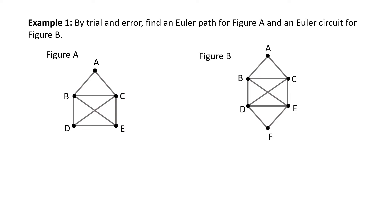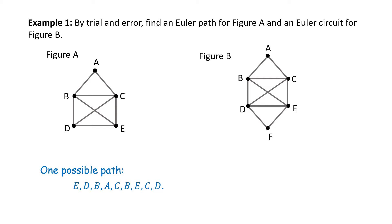By trial and error, find an Euler path for figure A and an Euler circuit for figure B. Take a few moments to try both of these. For figure A, one possible path: I'll start at E, then go to D, B, A, C, B, E, C, D. That's one path — you find one.